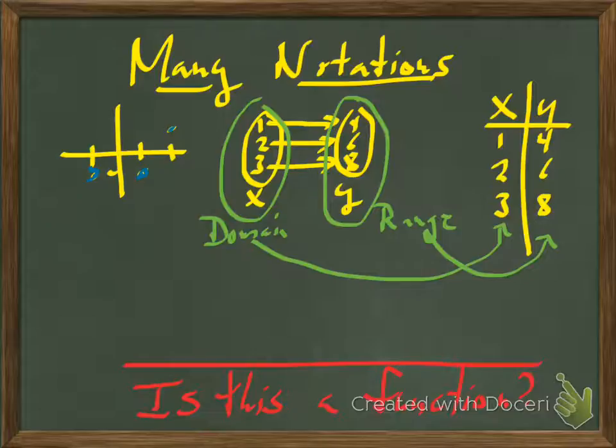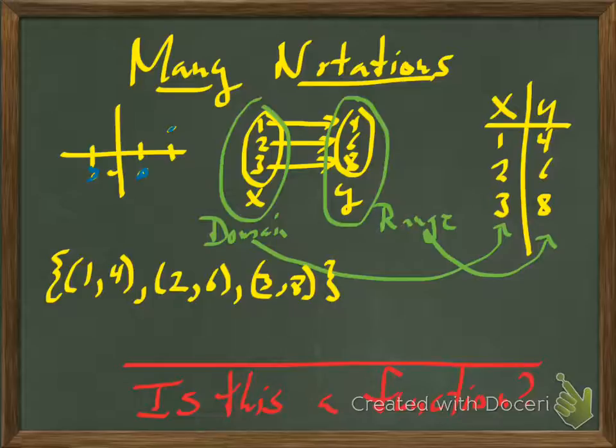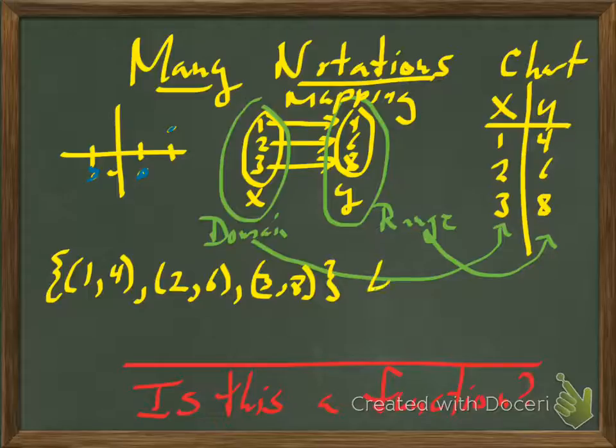Let's continue with the same function and write another notation down for it. The next notation is where I literally just list out the points as ordered pairs. The way this works, the first number is the x and it goes to 4, that's one ordered pair. The second value, 2, goes to 6. So we'll put that ordered pair down. And the last one would be 3, 8. All three of these are the same function. This one here is called the mapping notation or the mapping diagram. I think your book referred to it as a mapping diagram. This would be a chart, and this is basically a list of points.